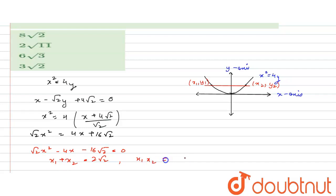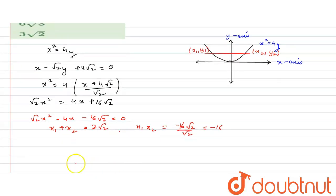And x₁x₂ will be minus of 16√2 by √2, that is minus 16. Now similarly, we will move ahead. We will replace the value of x in this equation.